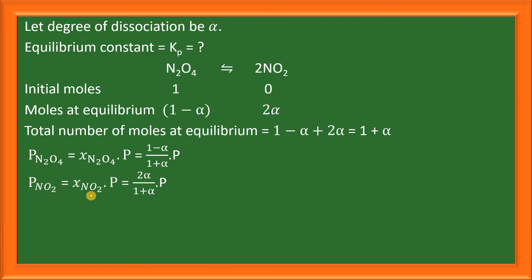Partial pressure of NO2 is equal to the mole fraction of NO2 times the total pressure. The mole fraction of NO2 will be the number of moles of NO2 divided by the total number of moles. The number of moles of NO2 is 2 alpha upon the total number of moles, which is 1 plus alpha.